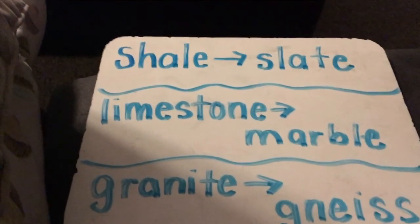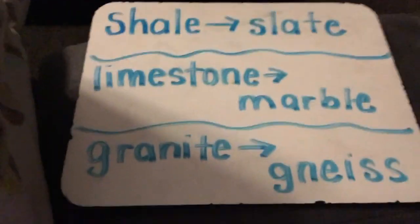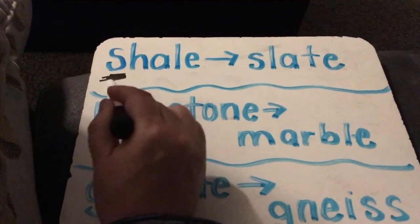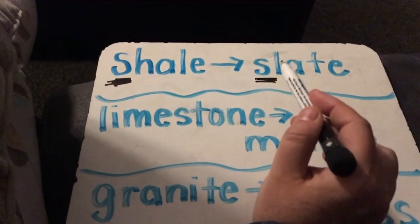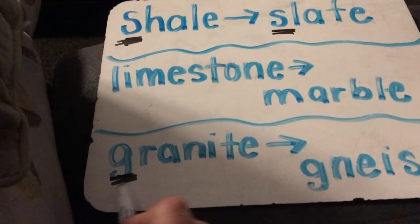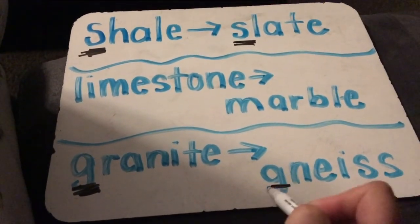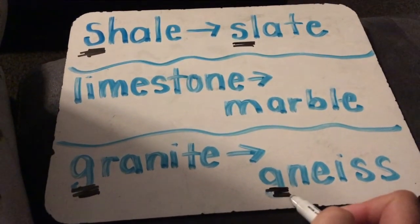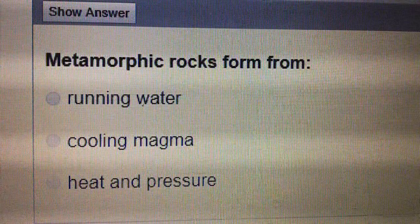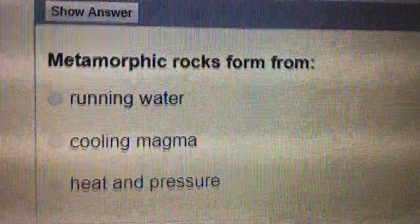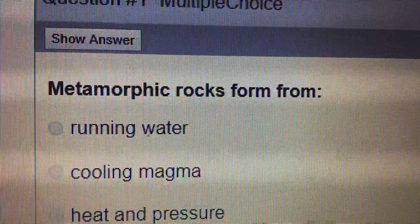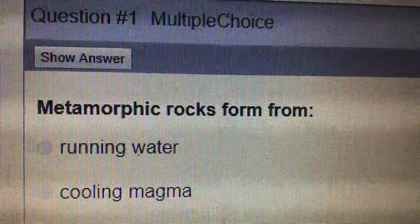To recap: shale, which starts with an S, is turned into slate, which starts with an S. And granite, which starts with a G, is turned into gneiss, which starts with a G. Metamorphic rocks form from great heat and pressure.